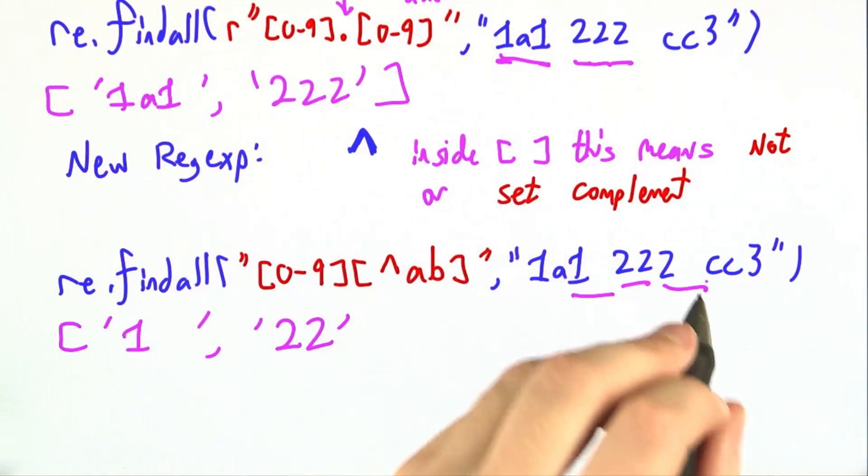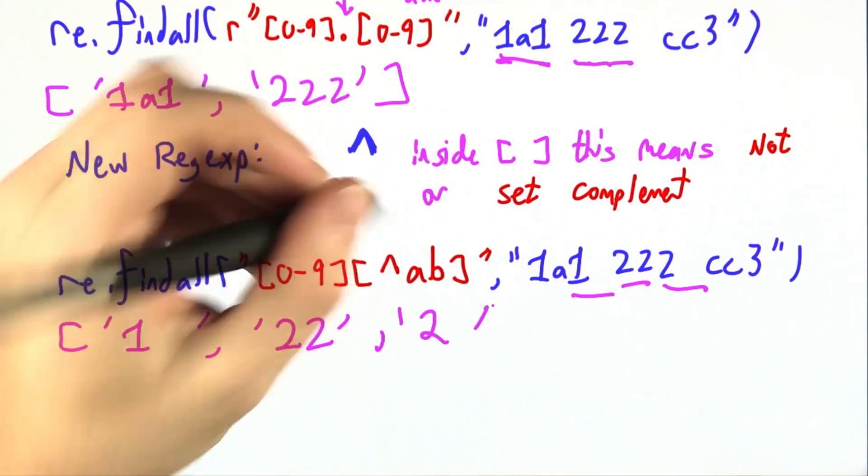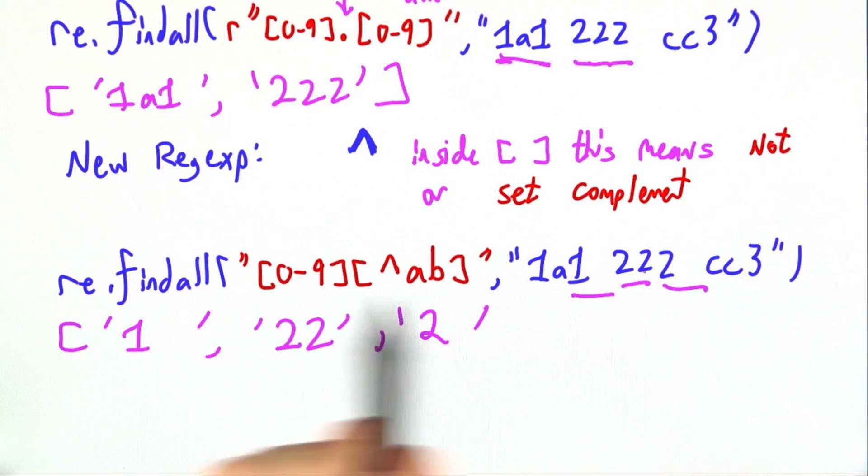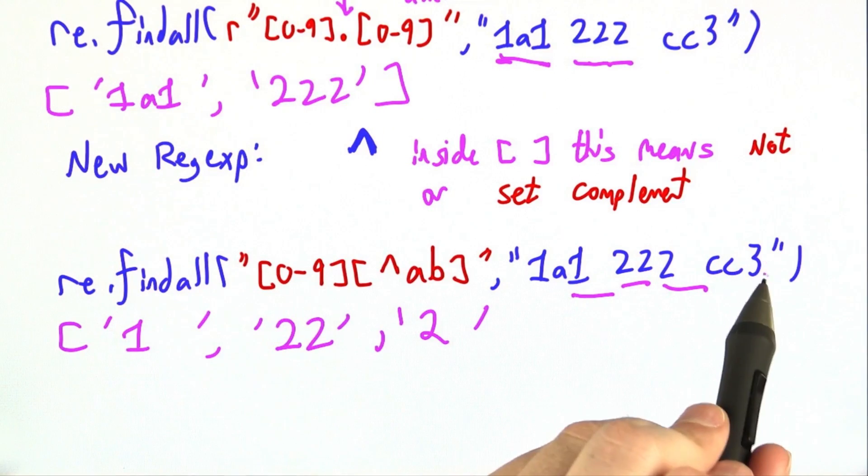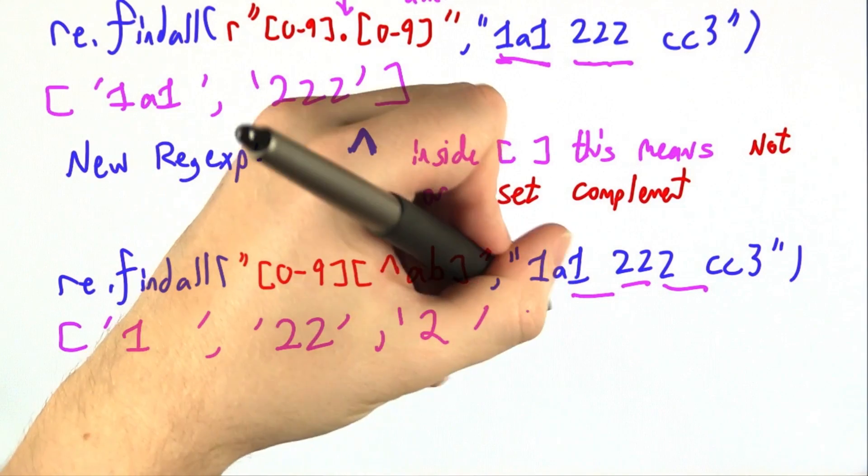And here we've got a 2 and a space, and this space is not a or b, so that looks good. A c is not 0 through 9, c is not 0 through 9, 3 is 0 through 9, but then we're at the end of the string. So that's it.